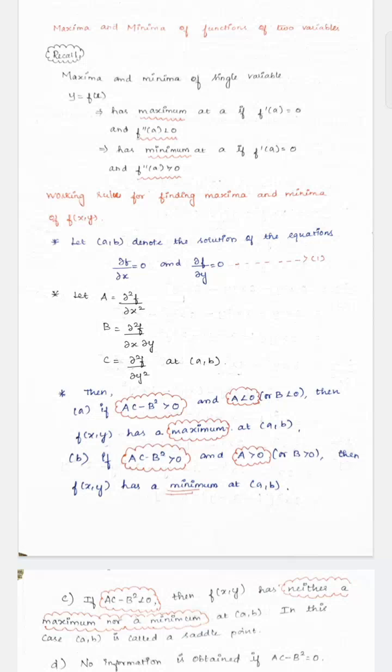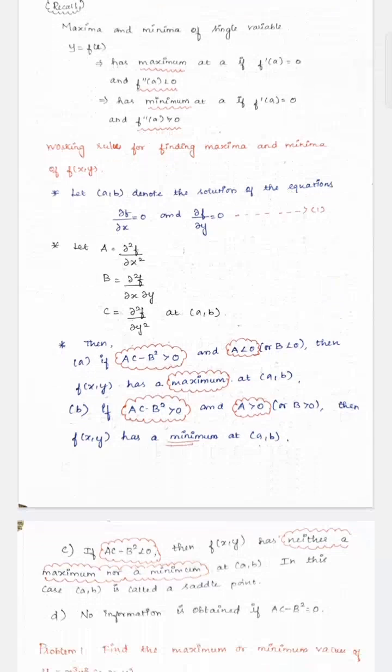After having found A, B, and C, we compute the value of AC - B². If this value is greater than 0, we may proceed. If AC - B² > 0 and A is less than 0, then we say the two-variable function f(x, y) has a maximum at (a, b). Similarly, for finding a minimum, AC - B² must be greater than 0 and A must be greater than 0. Then we say the function f(x, y) has a minimum at (a, b).